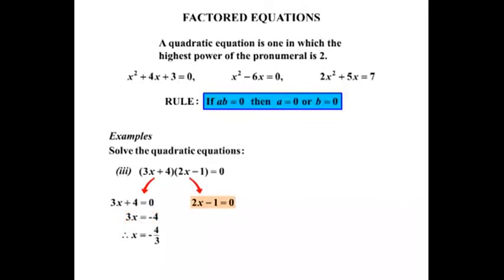Our other equation, 2x minus 1 equals 0. Take the minus 1 over becomes positive 1. And if we have 2x equals 1, we divide both sides by 2 and therefore get that x equals 1 half. Excellent. So there are two solutions there.